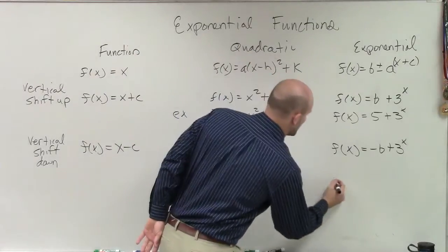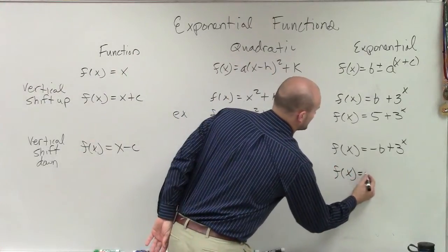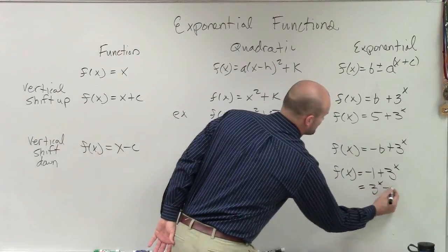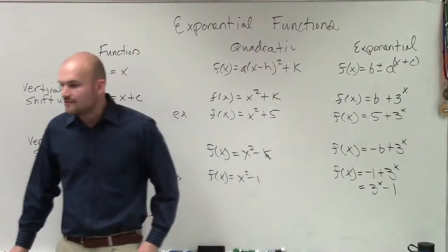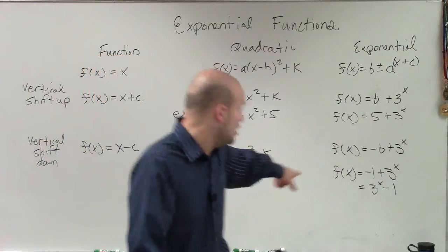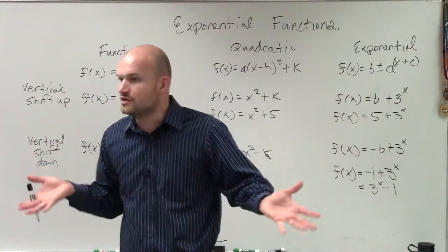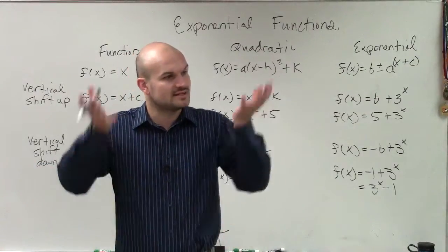If I say f of x equals negative 1 plus 3 to the x, or 3 to the x minus 1, it doesn't matter how I write it. If I write it like that, then you see - oh, you're subtracting 1 from your function. So therefore you're going to take your exponential function and you're going to shift it down.